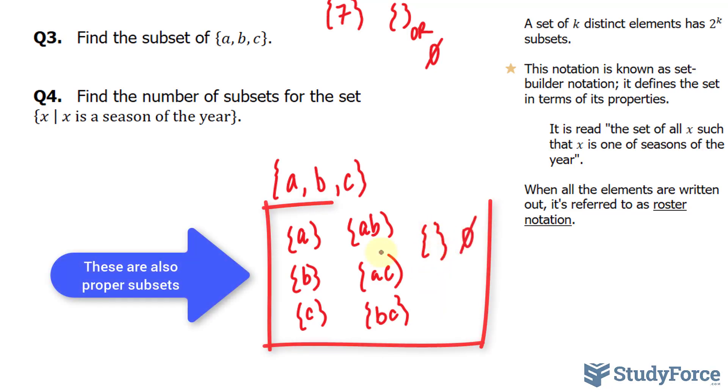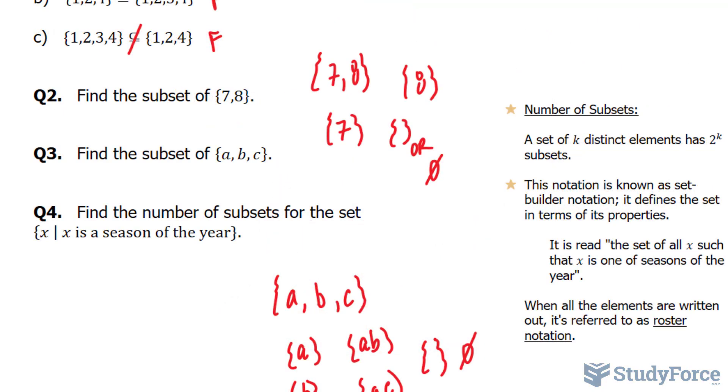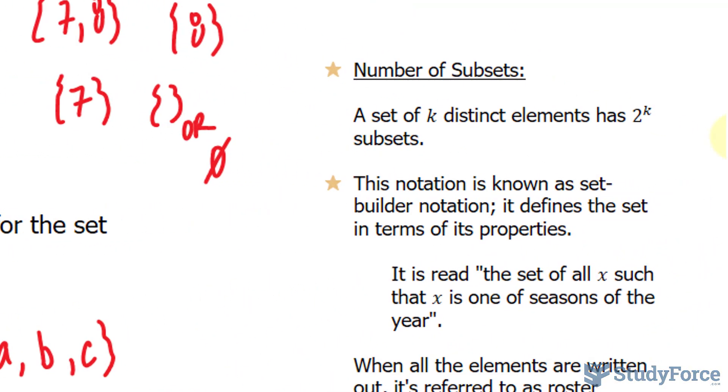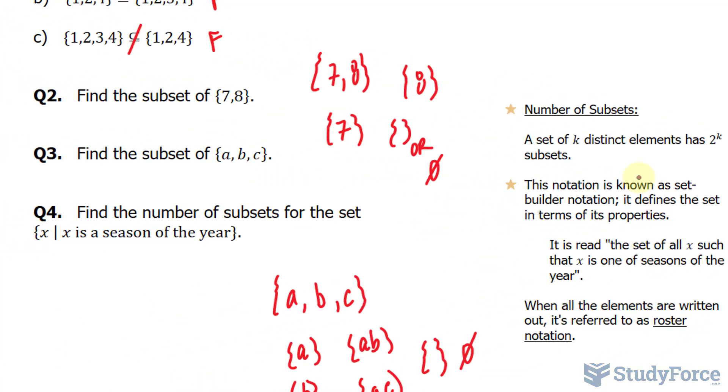Therefore, for a set with three elements, you have up to eight possibilities. It turns out that the number of subsets can easily be identified by using the formula 2^k, where k represents the number of distinct elements in that set. So here we would have 2^2, that's equal to 4. Here we would have 2^3, which is 8.